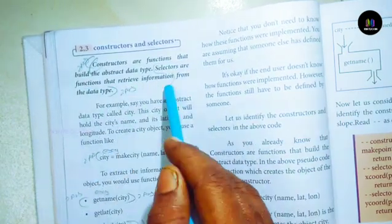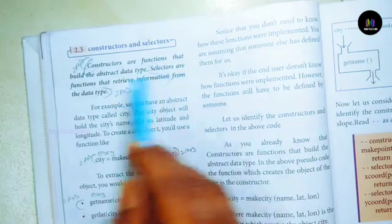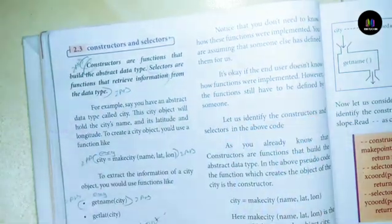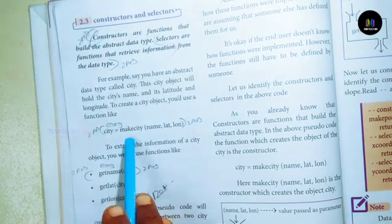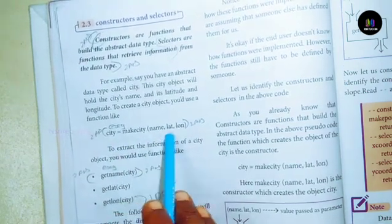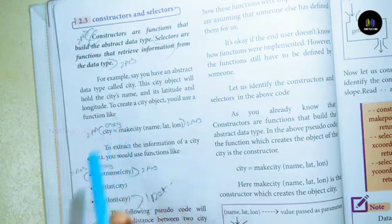Example: city equal to make_city name, lat, lon. This is the constructor concept.